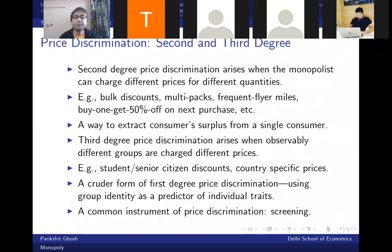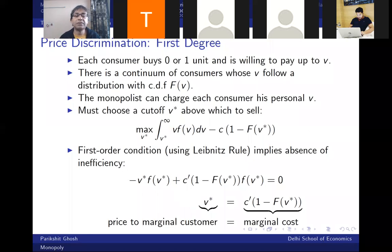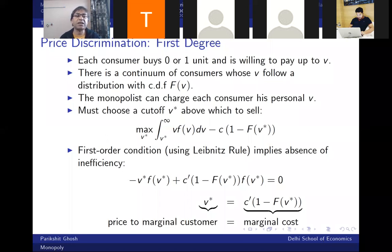Once we allow for perfect price discrimination, all consumer surplus is sucked out of the market, so it's in the monopolist's interest to choose the efficient quantity. The monopolist knows each buyer's exact V — their maximum willingness to pay — and charges them that price. Each person is indifferent between buying and not buying, leaving zero consumer surplus. A student clarifies: yes, V is the individual price charged, different for different people.